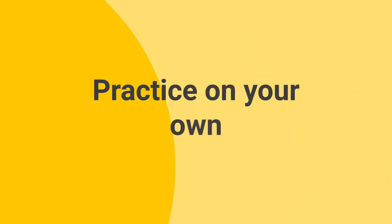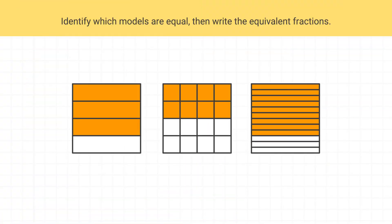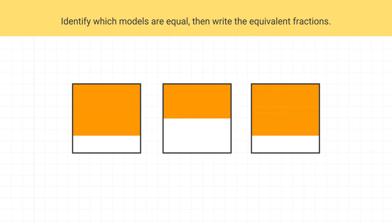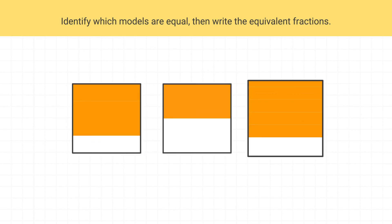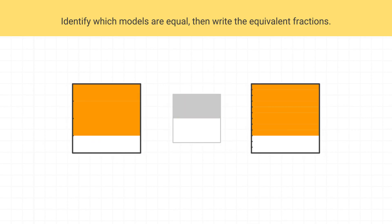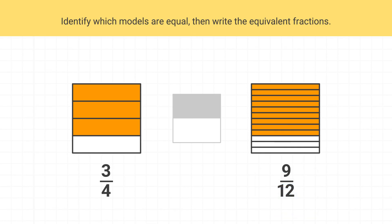Now it's time for you to practice on your own. Identify which models are equal, then write the equivalent fractions. When you look at these models and ignore the lines, you can see this model and this model have the same amount shaded — this one doesn't. This first model is three fourths, and this model — counting carefully — is nine twelfths. Therefore, you could write that three fourths is equal to nine twelfths.